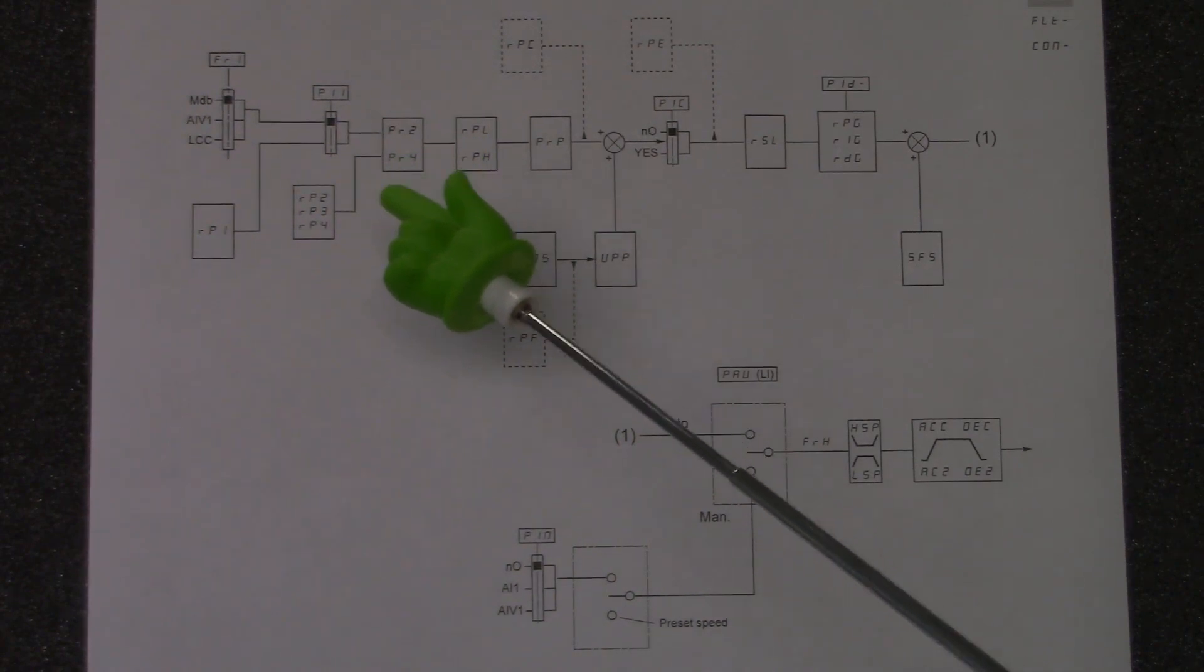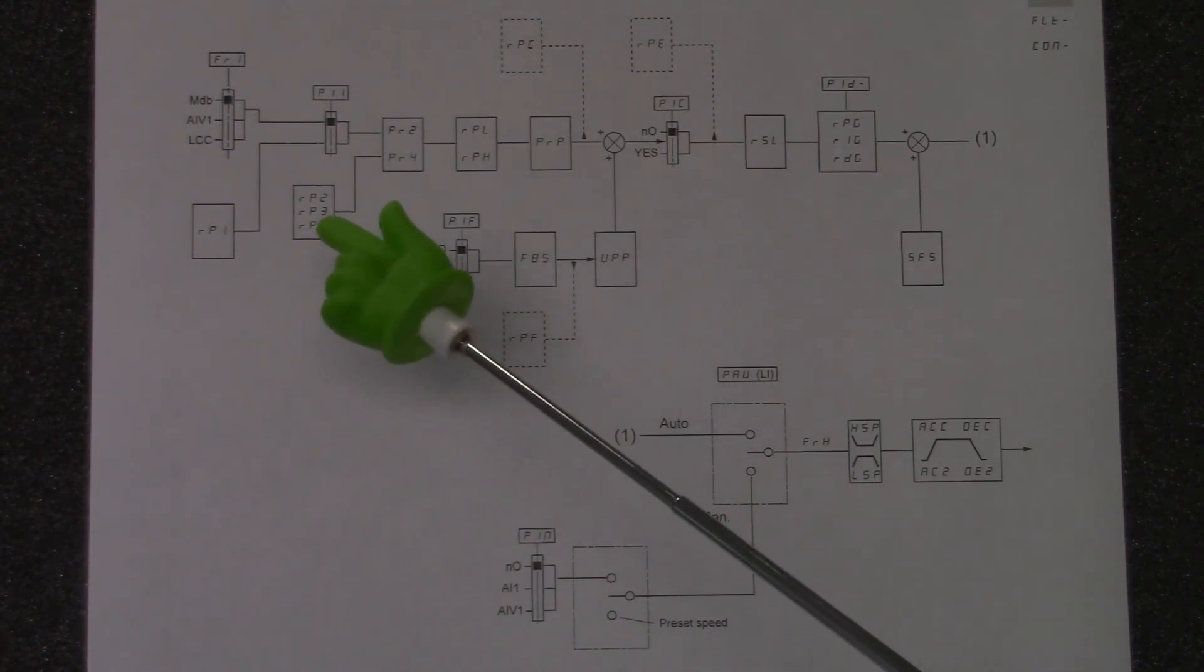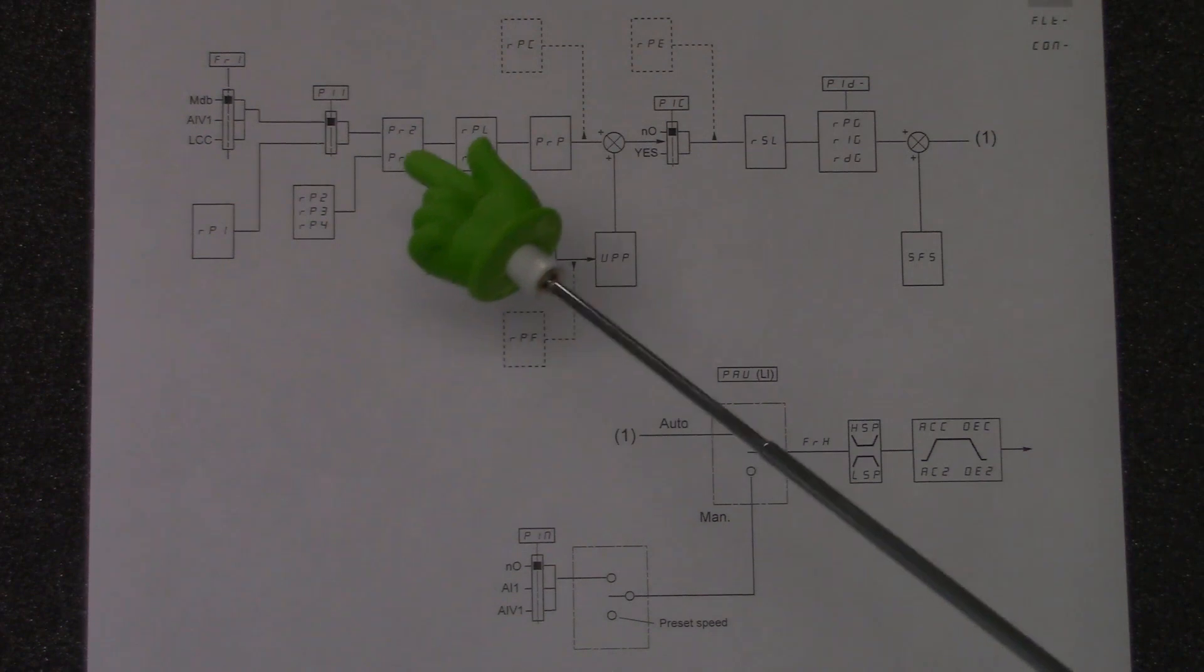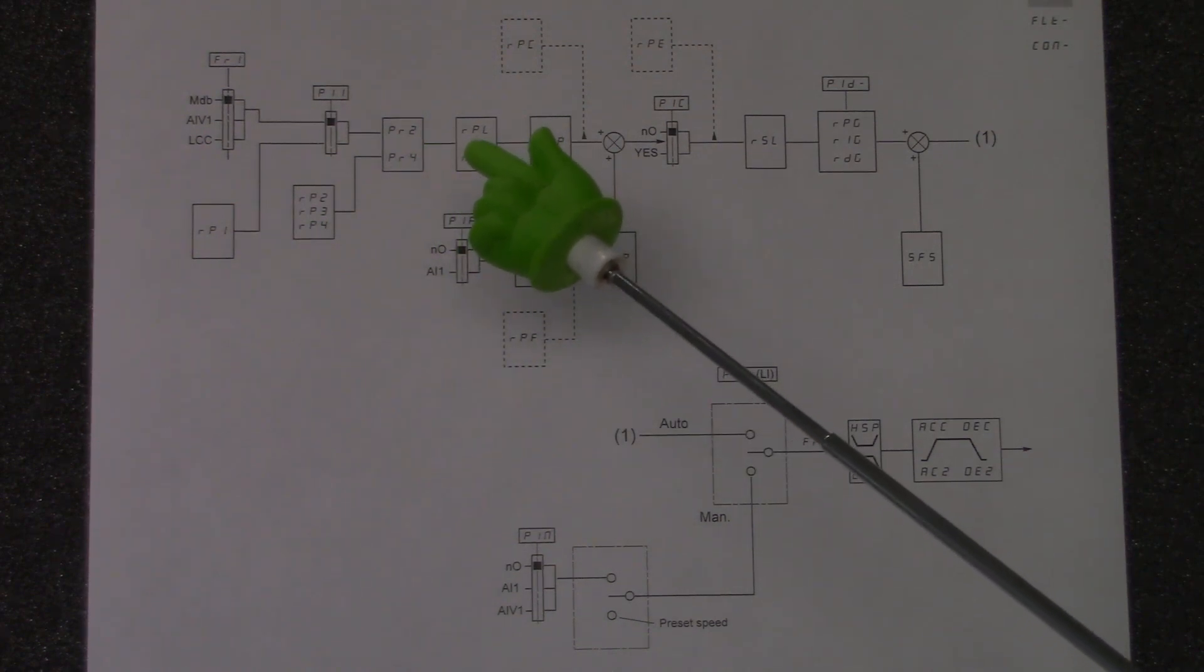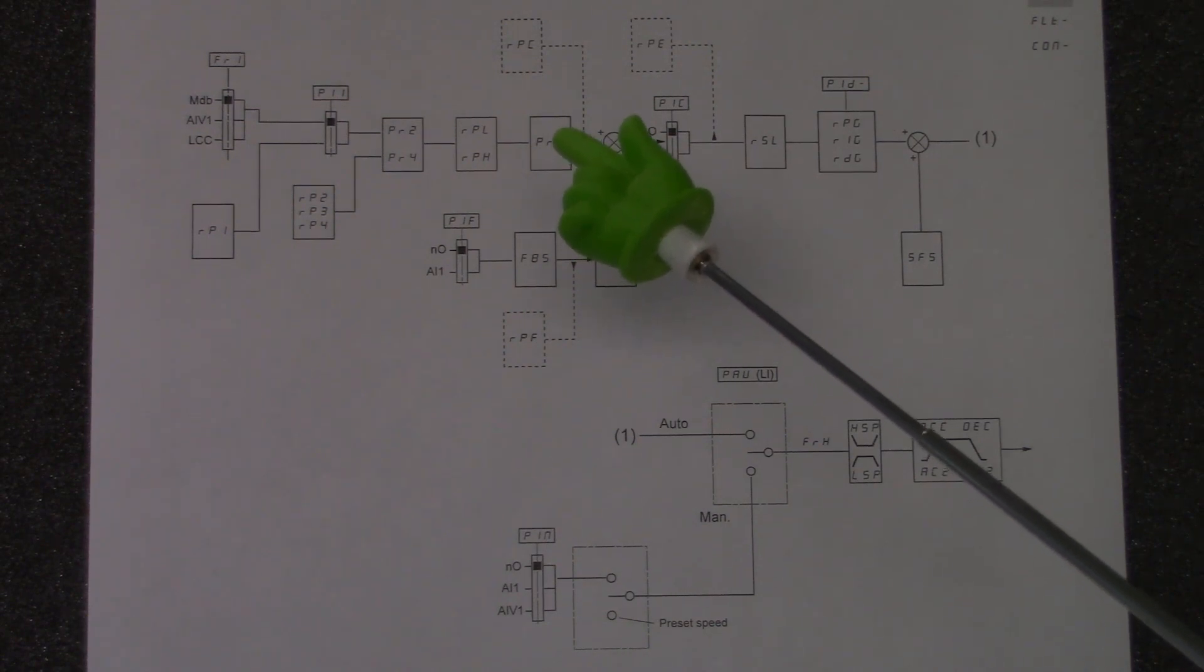We then go into the preset speed circuit and where the preset speeds are brought in from. And then we have the minimum and maximum on the PID loop. We then have ramp timer and then our summing block.